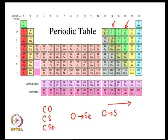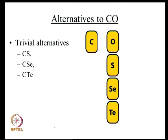We will now see what happens when we make CS and CSe. Carbon monosulphide, carbon monosulphide, and carbon monotelluride are trivial alternatives. However, carbon monosulphide is not a stable molecule by itself. To make CS one must start from CS₂, and similarly CSe from CSe₂. It is even more difficult to convert CS₂ to CS, CSe₂ to CSe, and CTe₂ to CTe.